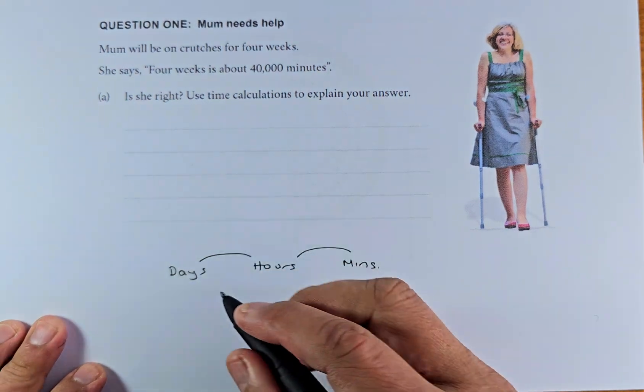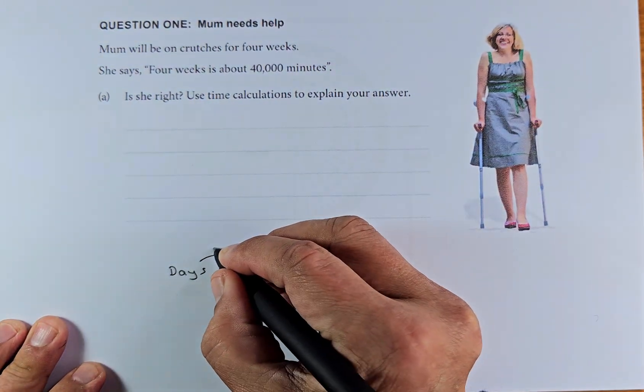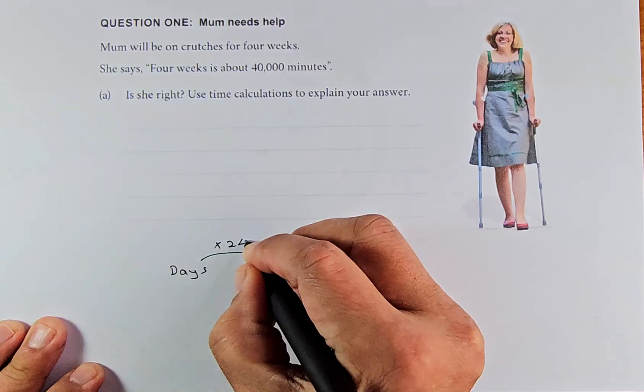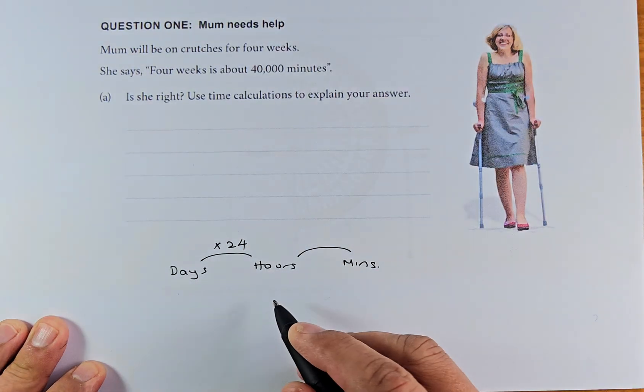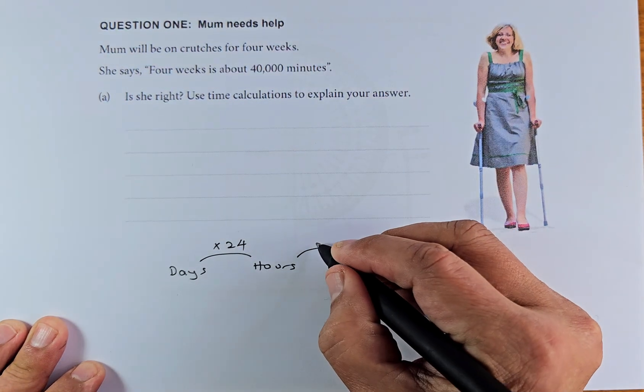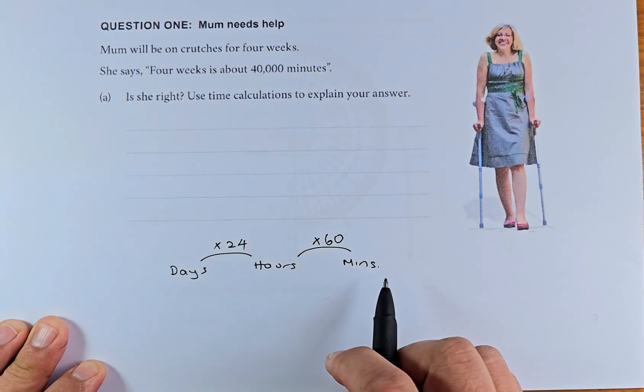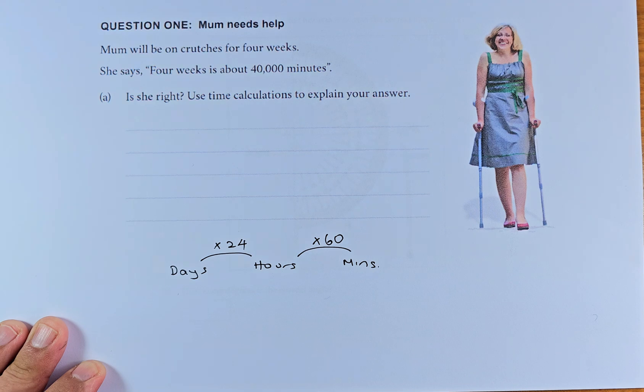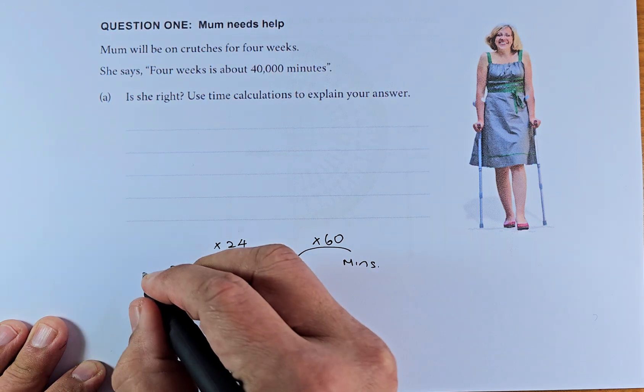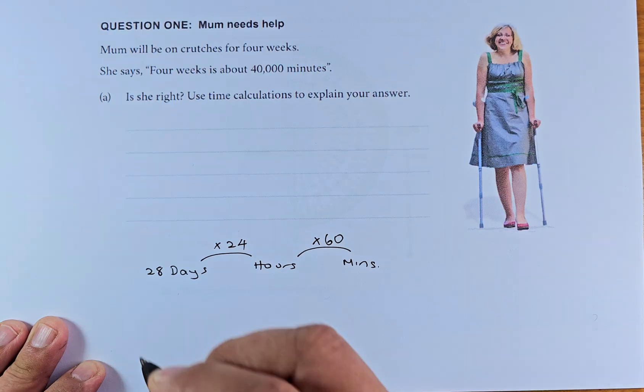One day has 24 hours. So if you get one day, to get the hours you multiply by 24. On the other hand, one hour is 60 minutes, so you're going to multiply 60 in that column. That is the diagram you need to remember. Now, four weeks is actually 28 days - one week is seven days, so four weeks is 28 days.